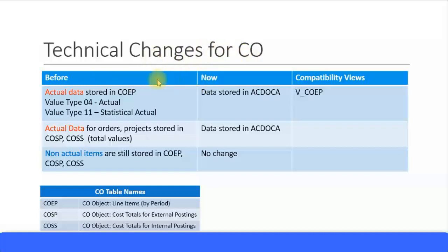I have two columns here showing how data was stored before and how it's stored now, along with any compatibility views. For actual data stored in the COEP table — the line items table for controlling — there are two types: actual with value type 04 and statistical actual with value type 11. Before, this was stored in the COEP table; going forward, it will be stored in the ACDOCA table.